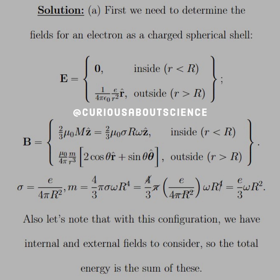We've seen that the electric field inside, by Gauss's law, is zero. And then we just have 1 over 4 pi epsilon, Q over R squared, but Q here is E, pointing in a radial direction. For the B field, again, spinning shell — we have the magnetization, which is mu R omega for inside, and then we have the dipole for the outside. The sigma is the surface charge density, so we have E over 4 pi R squared. M, the magnetic moment, had the special form of 4 pi sigma omega R to the fourth. If we plug in sigma, we see a lot of cancellations, and that boils down to E over 3 omega R squared.